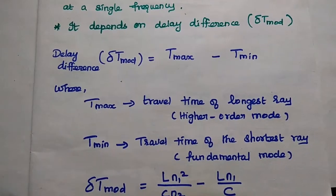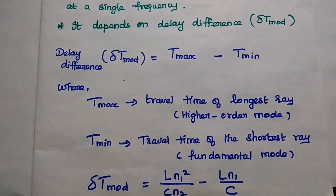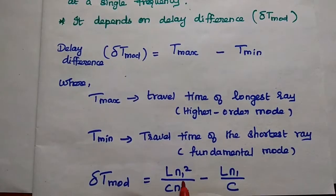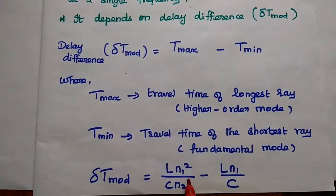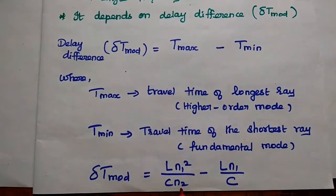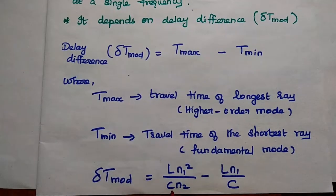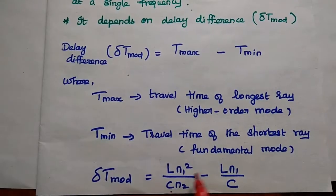It can be represented as L N1 squared by C N2 minus L N1 by C. Here N1 represents the refractive index of the core. N2 represents the refractive index of the cladding. C is the velocity of light. L is the fiber length.